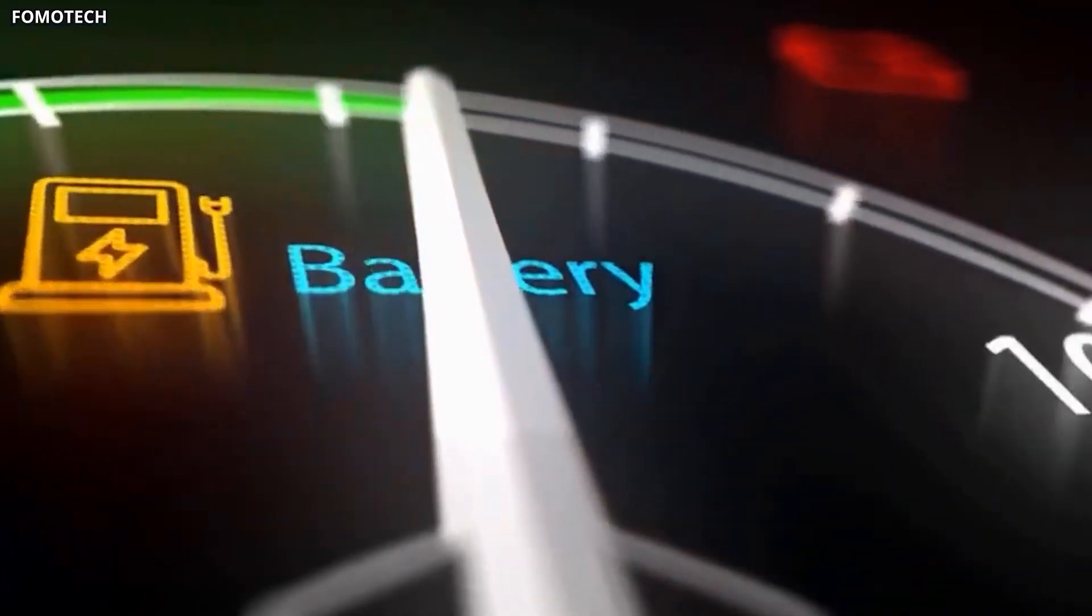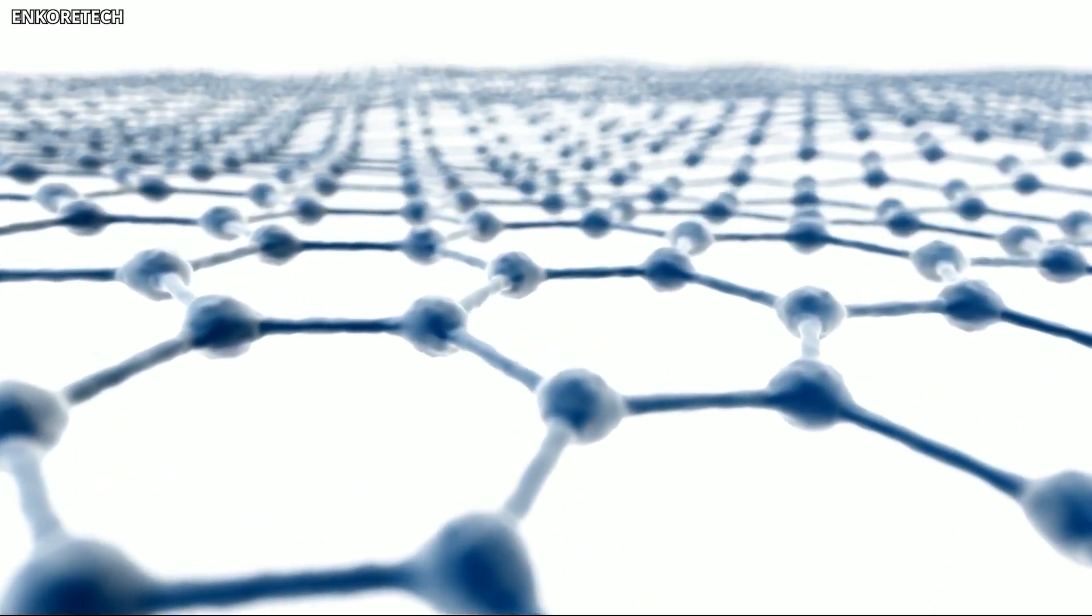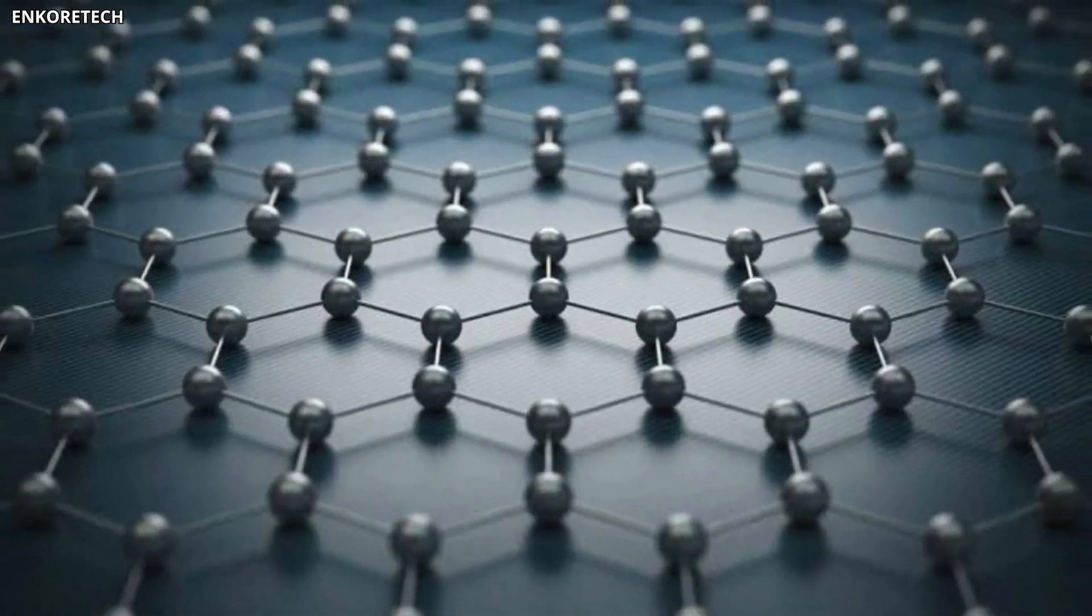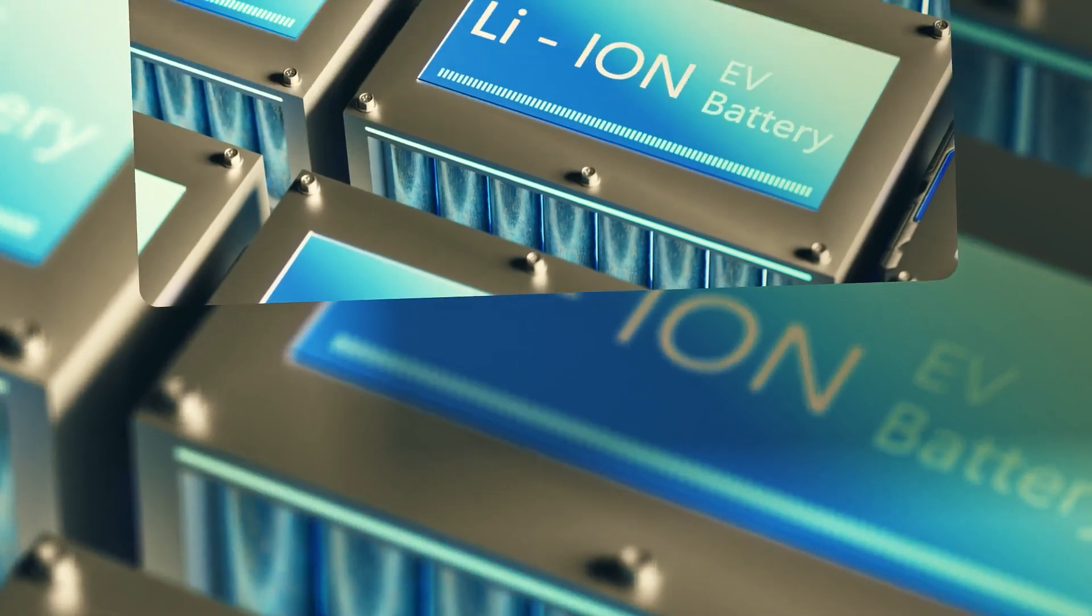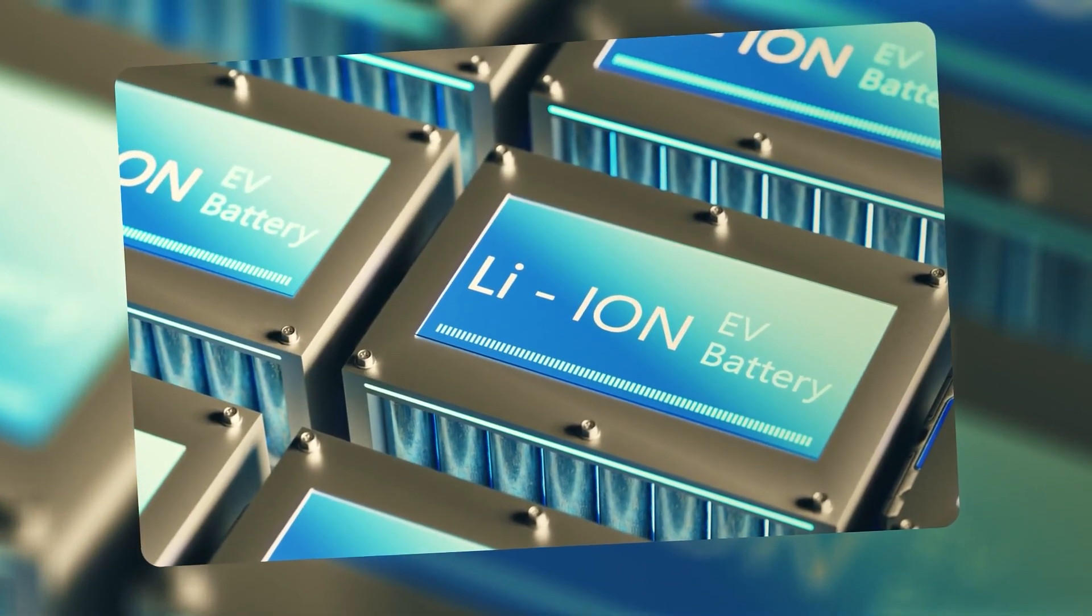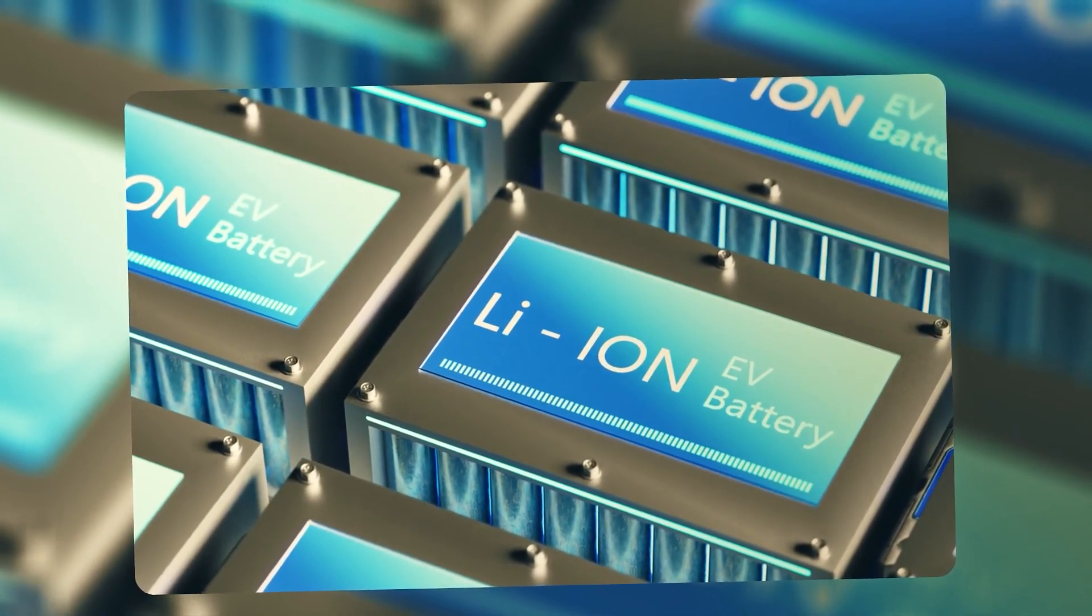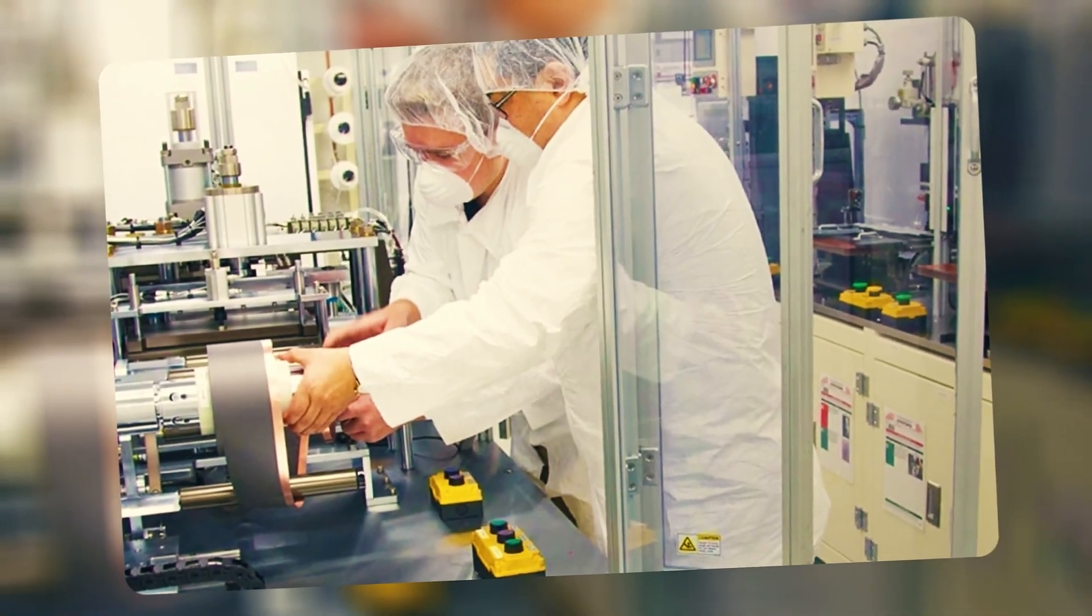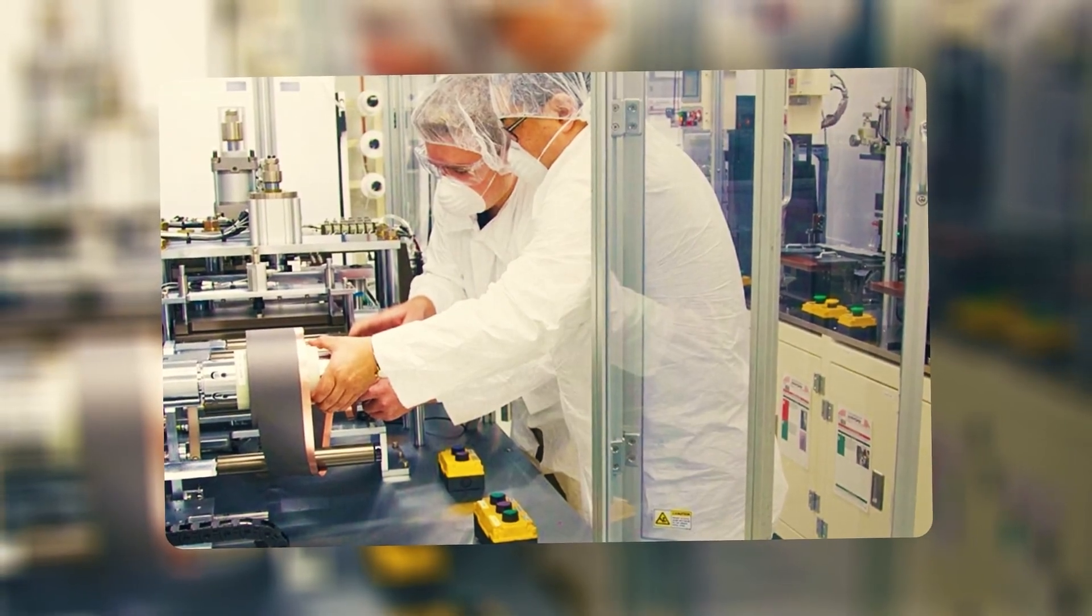Batteries need materials that can move electrons quickly, handle heat without degrading, and maintain structural integrity through thousands of charge cycles. Graphene does all of that. In theory, adding it to a battery could make charging faster, increase how much energy fits inside, extend the lifespan, and reduce the risk of overheating or fires. The obsession started almost immediately after its discovery. If you could replace or enhance the materials inside lithium-ion batteries with graphene, the improvements could be enormous. But turning a lab curiosity into something you can manufacture by the millions turned out to be far harder than anyone expected.